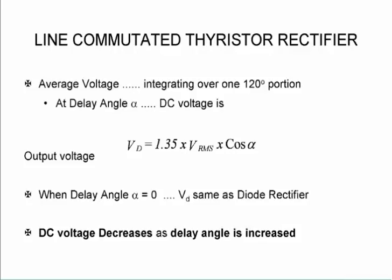So again if we integrate over a period of 120 degrees, this is what we get. This was the previous one with the diodes, but now we add plus alpha. And as you can see if that angle is zero, then VD becomes the same as the diode rectifier.